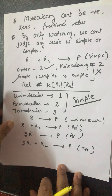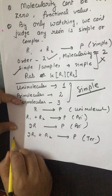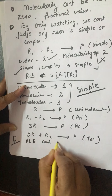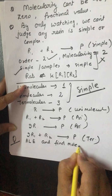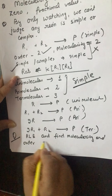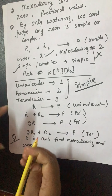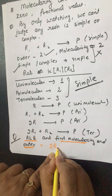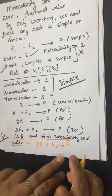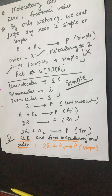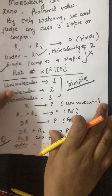Now let's solve a practice problem. Write down the rate law expression (RLE) and find the molecularity and order for the reaction: 2R1 + R2 → Product, given that it is a simple type of reaction. You have to find out the RLE, molecularity, and order for this reaction and message me your answer.